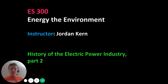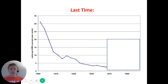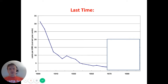Welcome to part two of the history of the electric power industry. Last time, we talked about the developments in the early days of the electric power industry that led to this incredible decline in the cost of electricity that lasted about 60 or 70 years, and how important this was to the economic development of the United States.